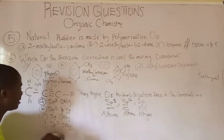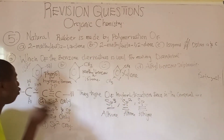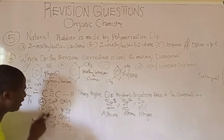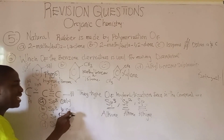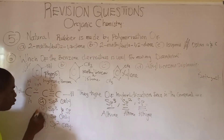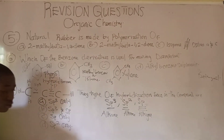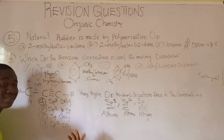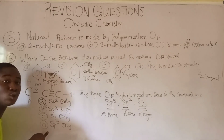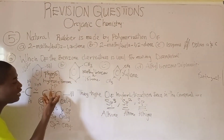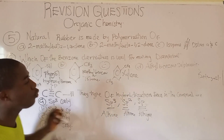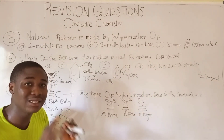So the answer is not sp³ only. Because we have both sp³ and sp, the correct answer is option B: sp³ and sp hybridization. Option C (sp only) is wrong because we have sp³, and option D (sp²) is wrong because there is no double bond in this compound.